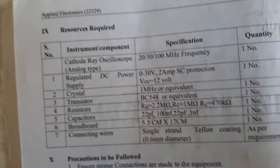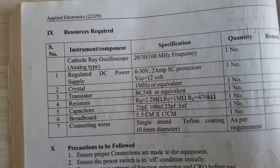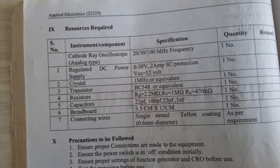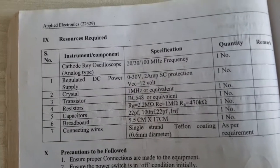Let's see what resources are used: CRO, power supply, crystal, transistor, resistors, capacitors, breadboards, and connecting wires. We will be seeing all this on the kit.